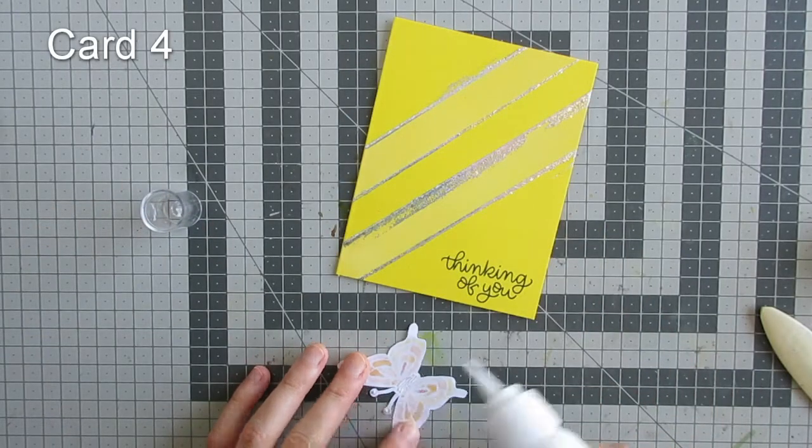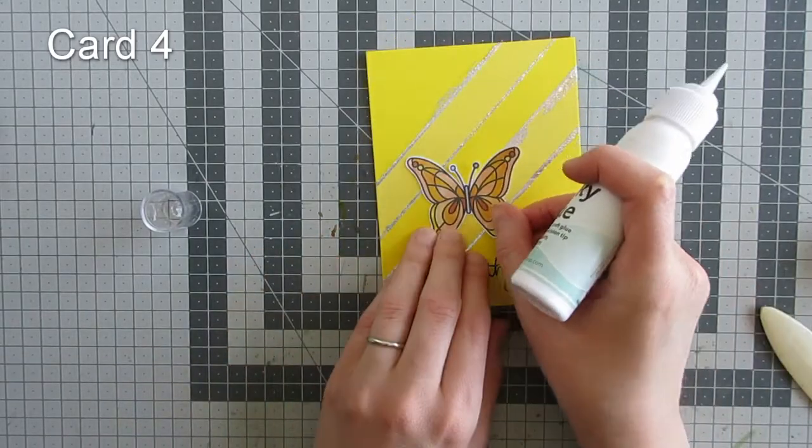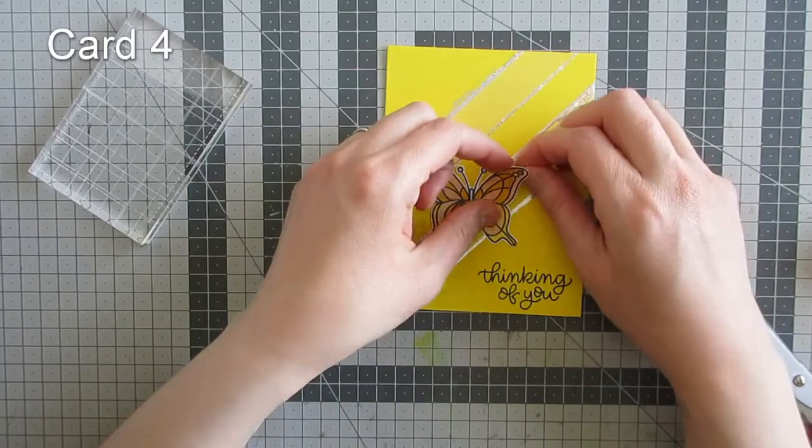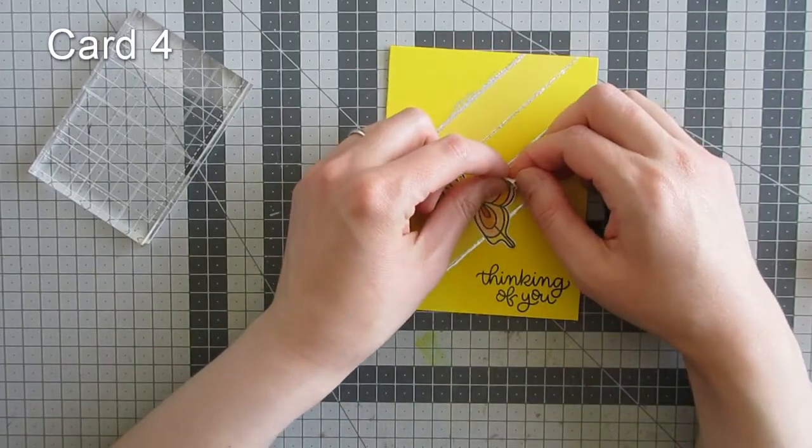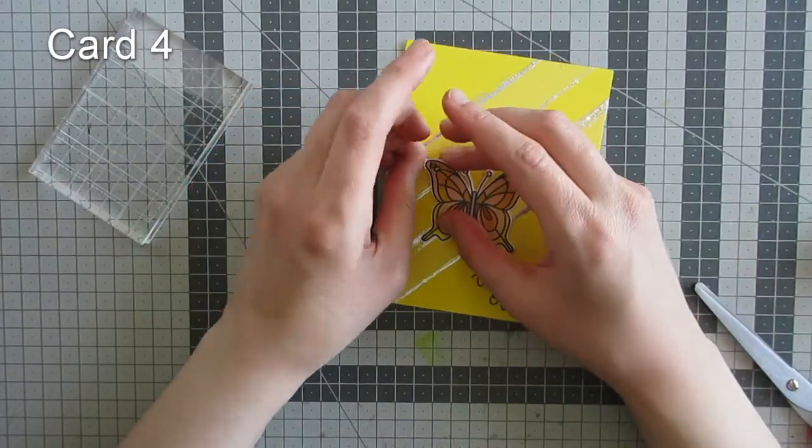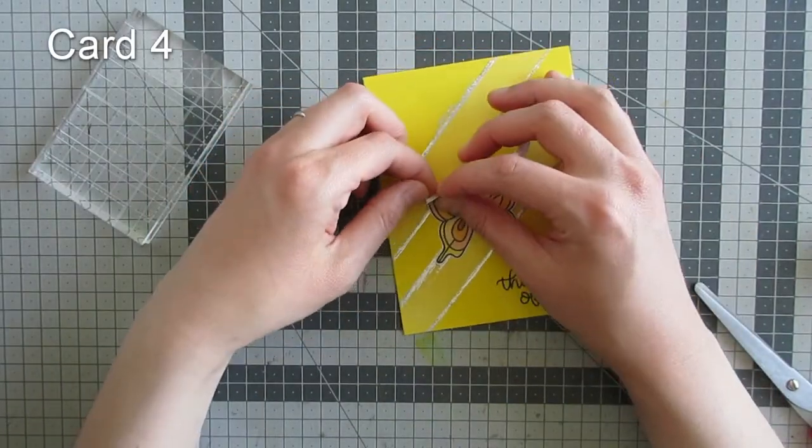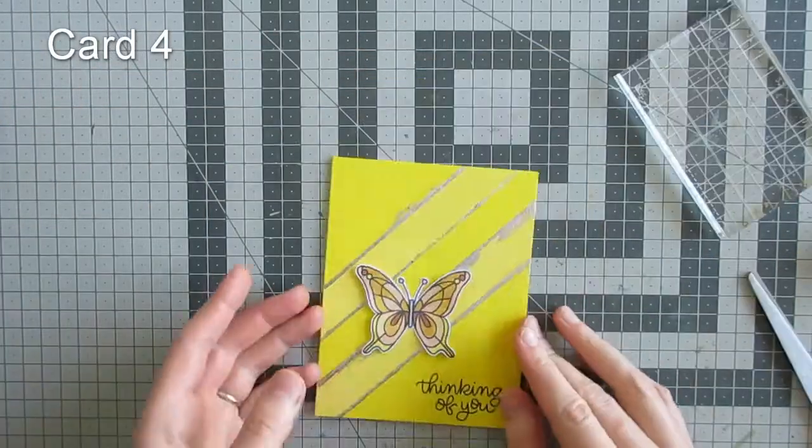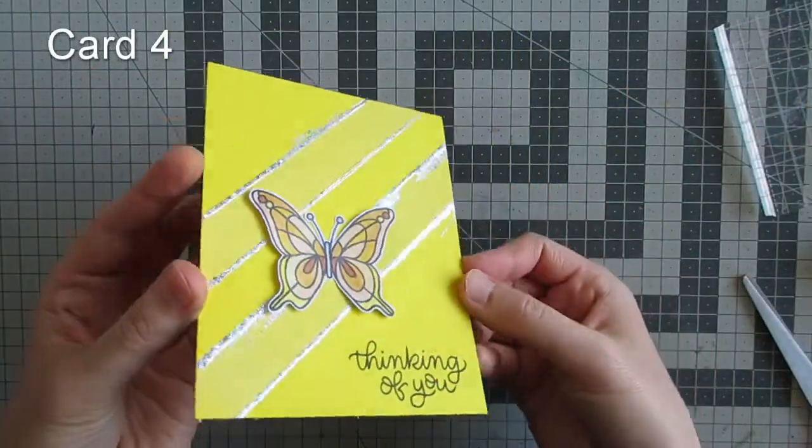I added my sentiment to the bottom right-hand corner. I colored and fussy cut a butterfly with shades of yellows and oranges and adhered that over my strips, first flat with glue, then adding foam tape behind the wings to give them volume. This helps add dimension and makes the butterfly look more realistic.